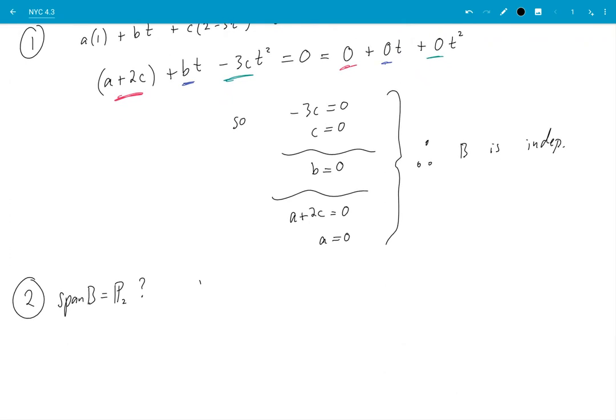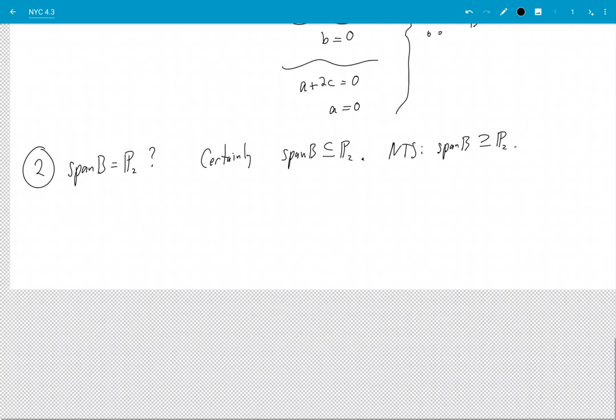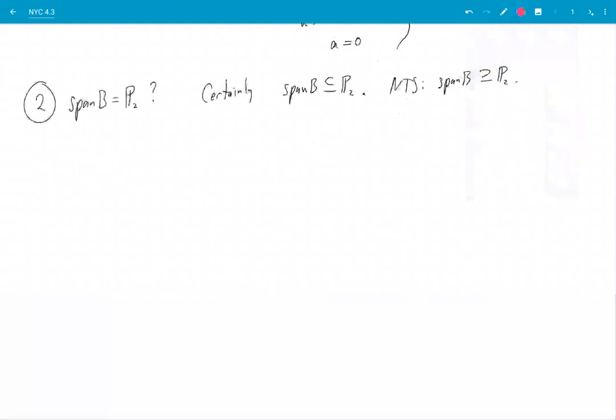Well it's going to get messy no matter which way. So let's start at the beginning. Okay certainly span of b is a subset of P₂. That's clear enough right, it's the span of some elements of P₂. So I need to show that the other way around is also true.